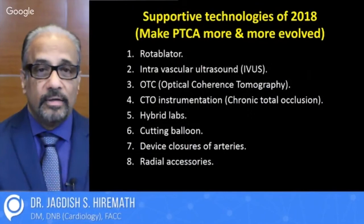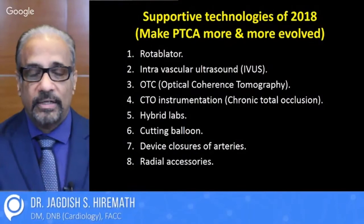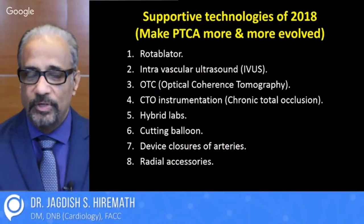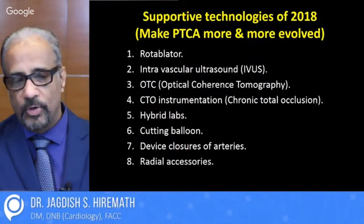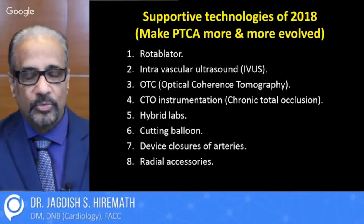Angioplasty evolved, and there were difficult lesions which could not be done by earlier techniques — hard calcific lesions, chronic total occlusions. So in came other modalities like the rotablator, which cuts the calcium; intravascular ultrasound, which looks at the good deployment of the stent; optical coherence tomography; CTO instruments; cutting balloons; and hybrid labs. All these devices are available in high-end labs, resulting in bigger and bigger success for angioplasty.